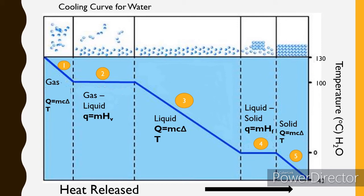Once liquid changes to solid, kinetic energy decreases again and there is a change in potential energy — potential energy decreases. That is the latent heat of solidification. In the solid state, the given heat energy equals mass multiplied by specific heat and temperature. As the phase of matter releases its heat — because this is an exothermic process — kinetic energy decreases, and potential energy also decreases.